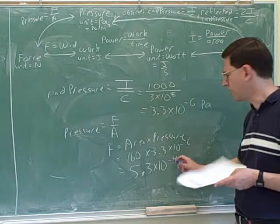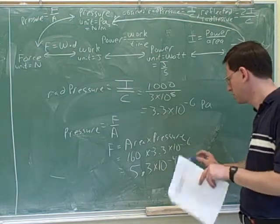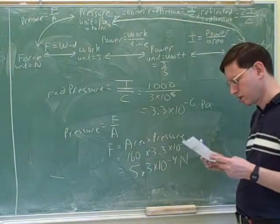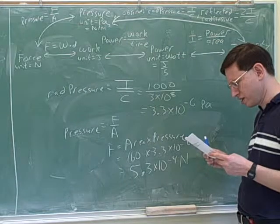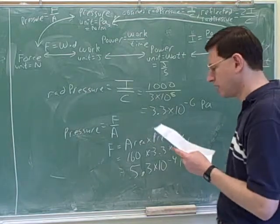So that times 160 gives you 5.3 times 10 to the negative 4. And the units for that were? Newtons. All right. Are we done? Yeah. Okay, good.